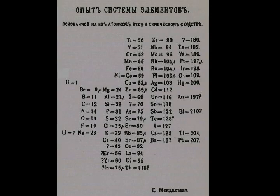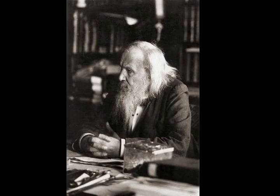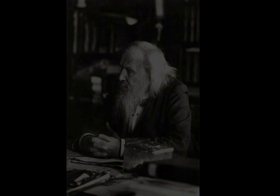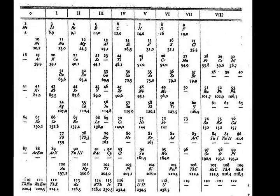Atoms consist of a small positively charged nucleus, made of positively charged protons and uncharged neutrons, surrounded by a cloud of negatively charged electrons. The charges cancel out, so atoms are neutral. Electrons participate in chemical reactions, but the nucleus does not.